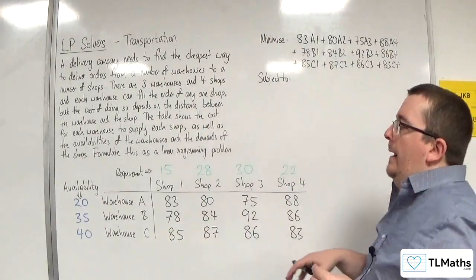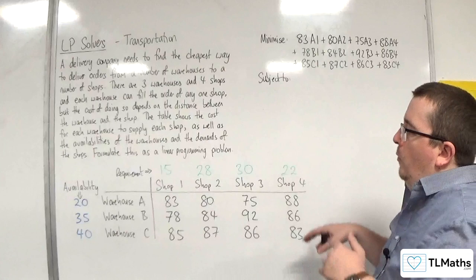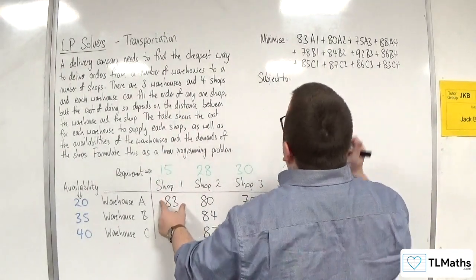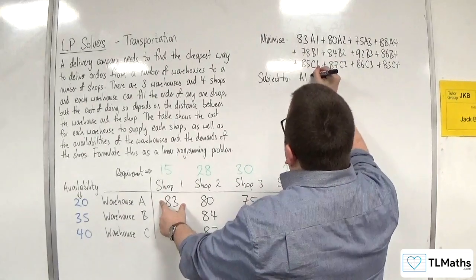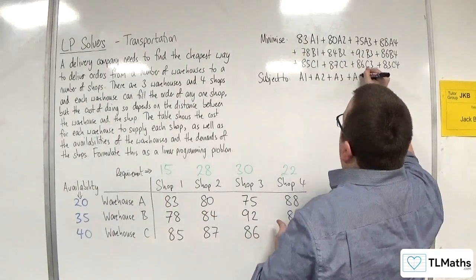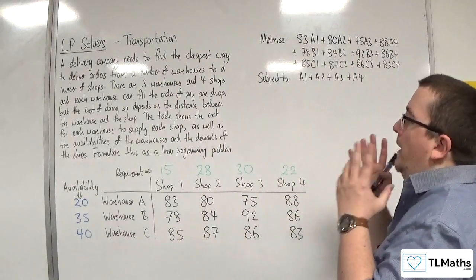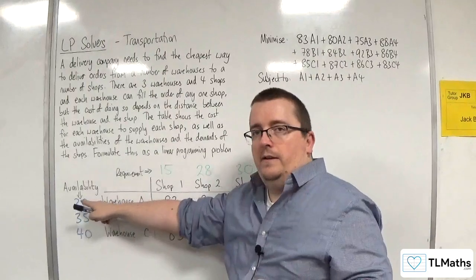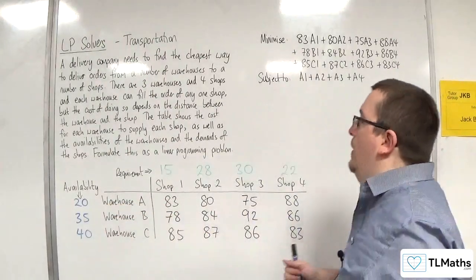All I need is for those numbers, so A1 plus A2 plus A3 plus A4, I need those values to add up to 20, because that's what I have available in the warehouse.